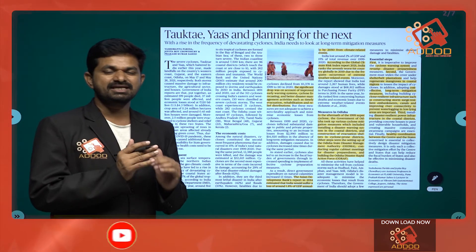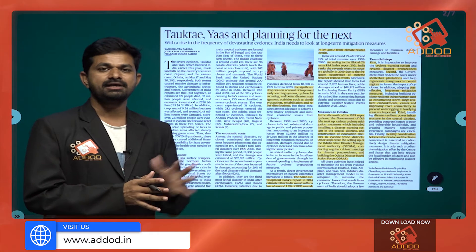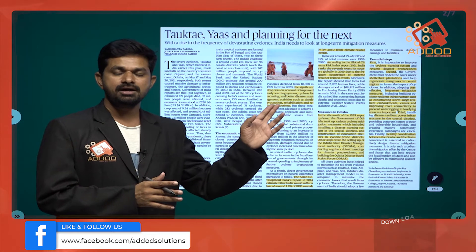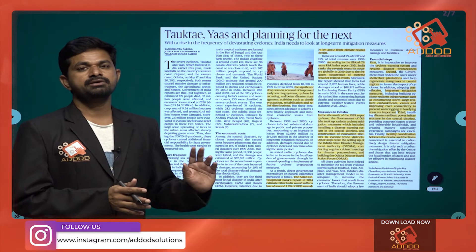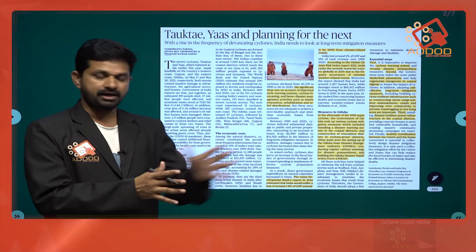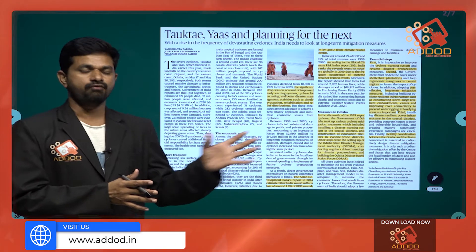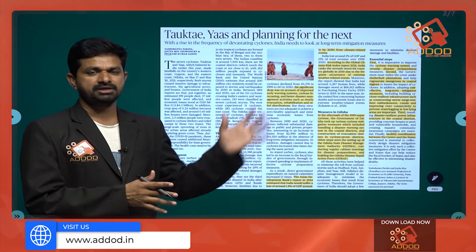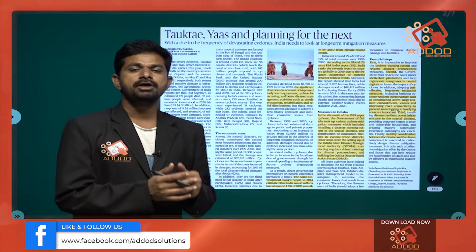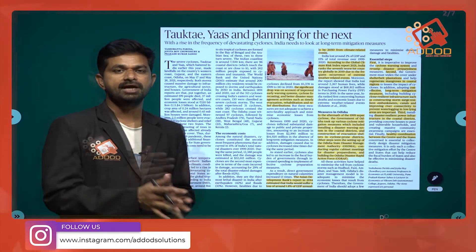What measures have we taken over a period of time to avoid or decrease the number of fatalities? In the 1990s, thousands of people died because of cyclones that hit the Odisha coast. But now, even single-digit fatalities are not expected from any cyclone. Hudhud was one of the biggest hits on the Vizag coast, and many cyclones are hitting coastal areas but are not causing the same magnitude of damage as earlier.